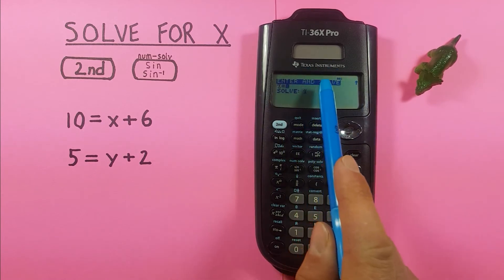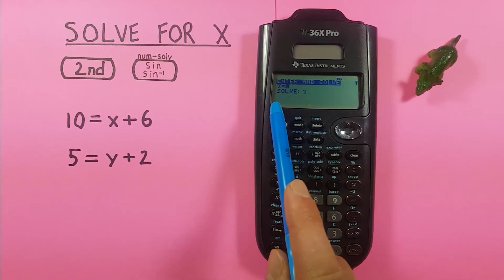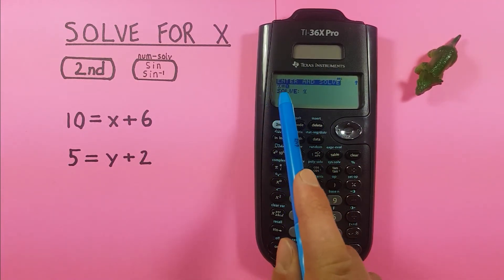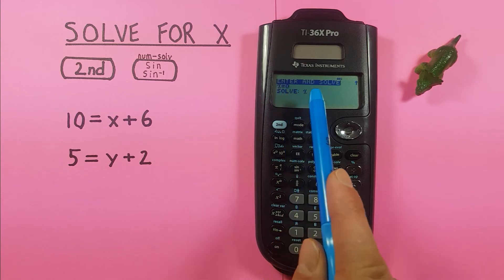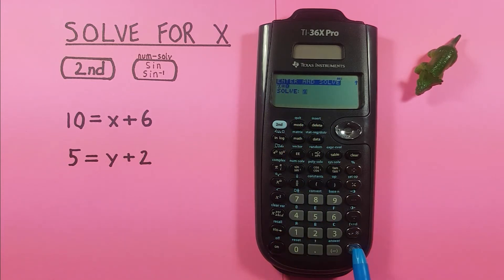Brings us to this screen here where it says x equals 0. This is what we have currently saved as our x variable in this calculator. There's currently nothing saved so it's showing us 0 and then solve for x. So we can press enter again twice.